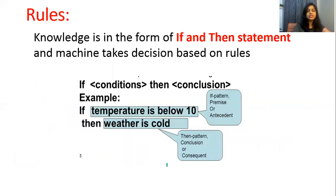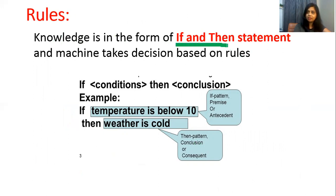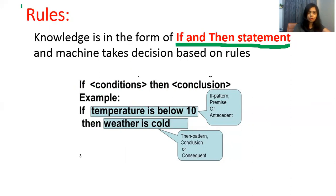Rules is the next type of knowledge representation — another technique for entering information into the machine. Rules is knowledge in the form of if-then statements. For example: if temperature is below 10 degrees, then weather is cold. We give such statements to the computer by writing a computer program, and these types of statements are known as rules. It is a technique by which we can enter information in the machine so that it can take decisions based on these statements.